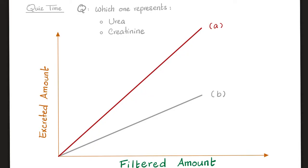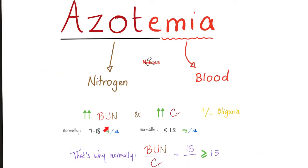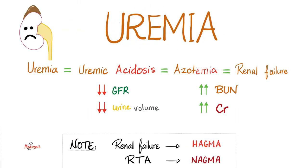On a filtration graph, creatinine (graph A) is excreted more than urea (graph B) because creatinine is not reabsorbed — it is secreted — while urea is partially reabsorbed. That's why the BUN-to-creatinine ratio is greater than 15; the higher the ratio, the better the kidney's reabsorptive function.